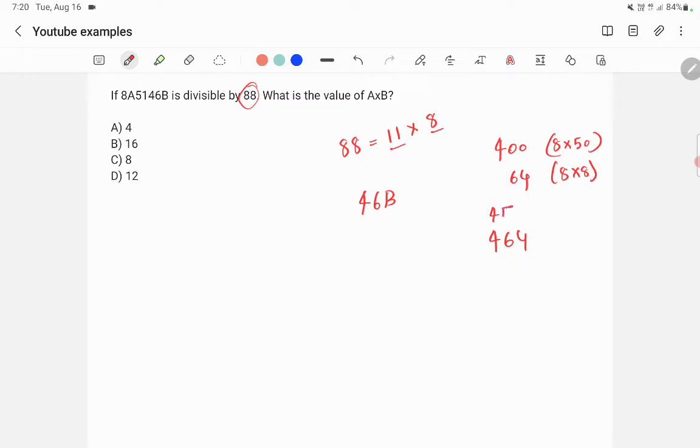The number before 464 that's divisible by 8 is 456, and the number after is 472. So the only possible value for b is 4. Now we need to apply the divisibility rule for 11.